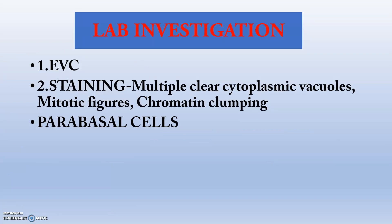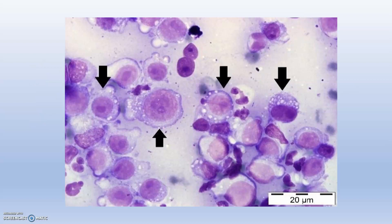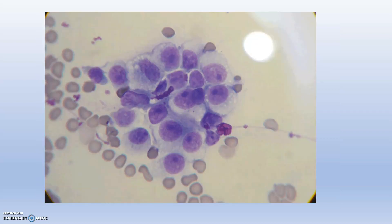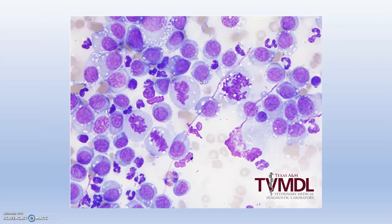For lab investigation, we can go for CBC and staining techniques such as Giemsa or Leishman staining. Multiple clear cytoplasmic vacuoles, mitotic figures, and chromatin clumping will be seen. Parabasal cells will be present. These are the parabasal cells and vacuolated cells with multiple clear cytoplasmic vacuoles. You can clearly appreciate both cells — the group of nodular cells — which are the TVT cells showing parabasal cells and nodular appearance of the cauliflower-like tumour mass.